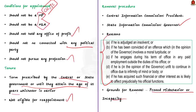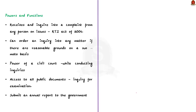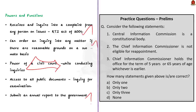In case of the Central Information Commission, the President can remove the Chief Information Commissioner and other commissioners. Similarly, in the case of the State Information Commission, the Governor can remove them. They can also be removed on grounds of proved misbehaviour or incapacity. Regarding powers and functions: it is their duty to receive and inquire into complaints from any person on issues related to getting information under the RTI Act 2005. They can order inquiries on suo motu basis, and while conducting inquiries, the commission has the powers of a civil court. The commission has access to all public documents during inquiry and submits an annual report to the government placed before their legislative organ.